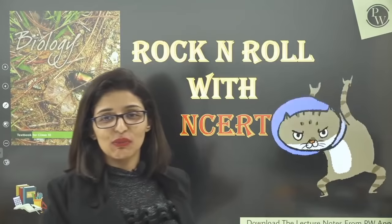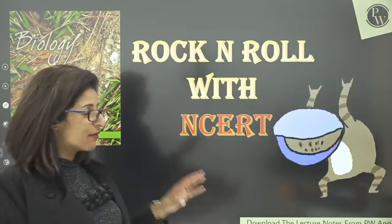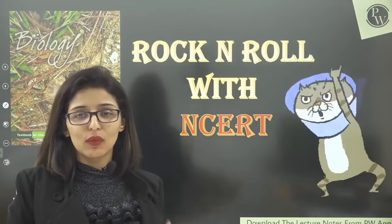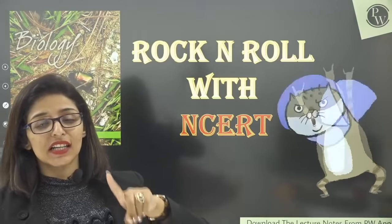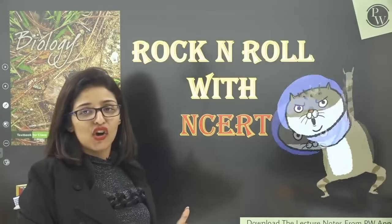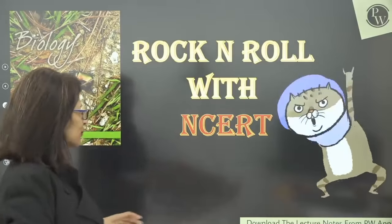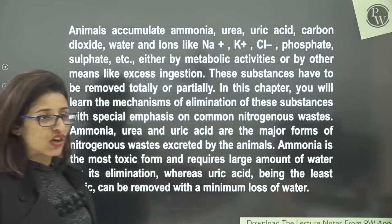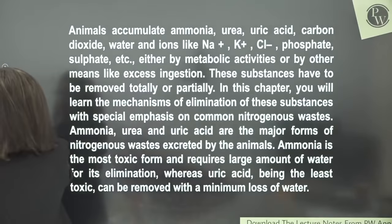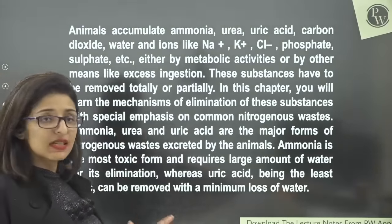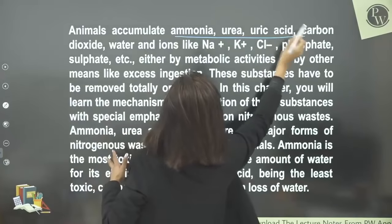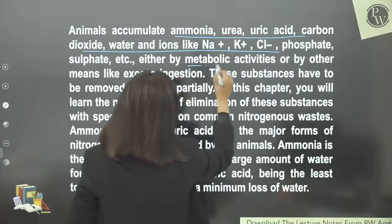I know you have been missing this session, and on your demand I have brought it back. Quickly get your NCRT ready. You need NCRT, highlighter, pen, and one or two sheets — that is all. We have already covered the whole chapter; today we are going to read it from NCRT. Starting from the very first paragraph — let me mark the important words. First, the significance of the excretory system: animals accumulate waste materials like ammonia, urea, uric acid, water, and ions from metabolic activities or excess ingestion.